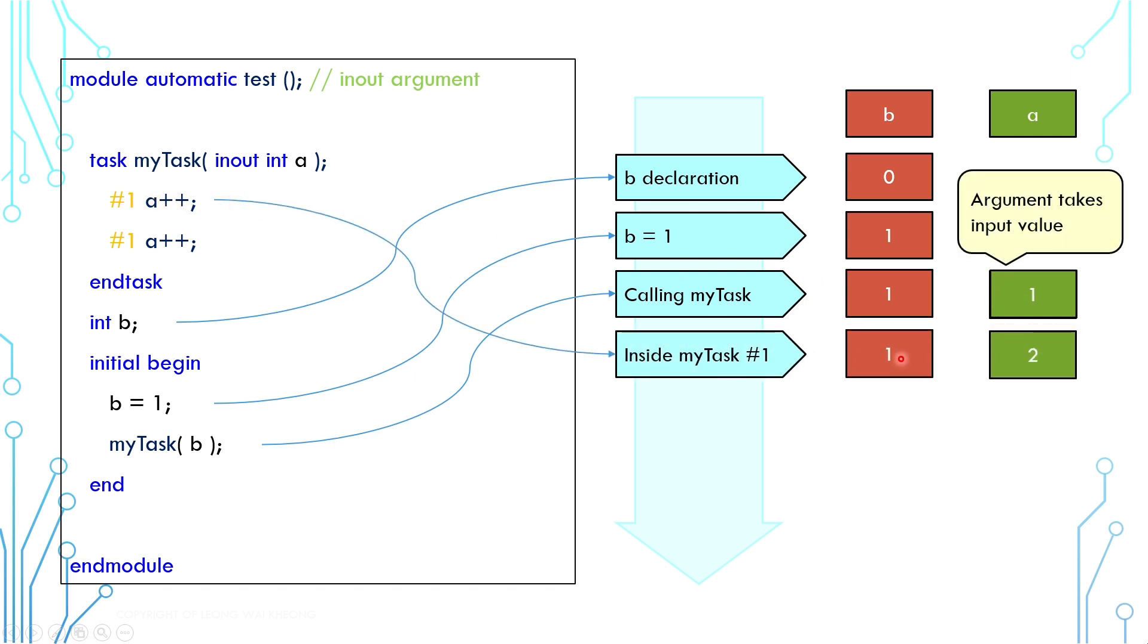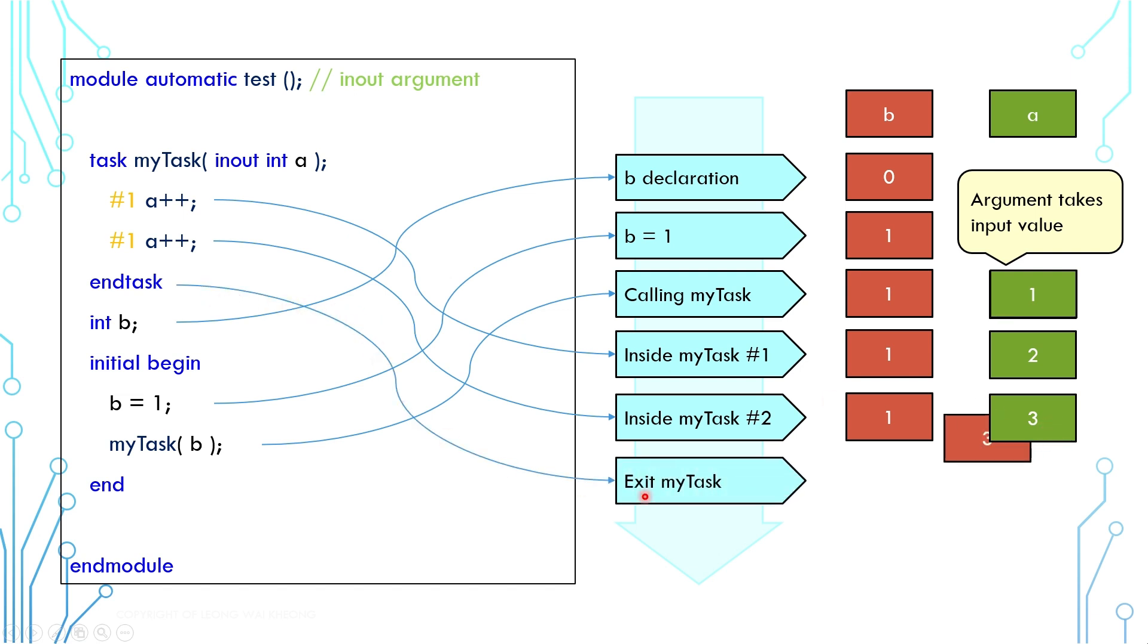A is then incremented to 2 and then incremented to 3. And then the task ends, passing back the final value of A to B. One thing to note is that, despite A and B are sharing the same starting and final value, the intermediate value of A2 at this point is not known to the caller variable B.